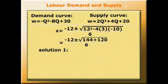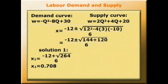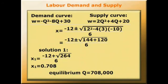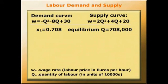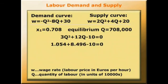So we have two solutions. The first one is (-12 + √264) / 6, which to three decimal places is 0.708. So the equilibrium quantity would be 708,000 units of labour in the industry. The quadratic also has another solution, but it's a negative number, which in our case is meaningless. We can check the answer: substituting 0.708 into 3q² + 12q - 10 gives 1.054 + 8.496 - 10 = 0, which is correct.